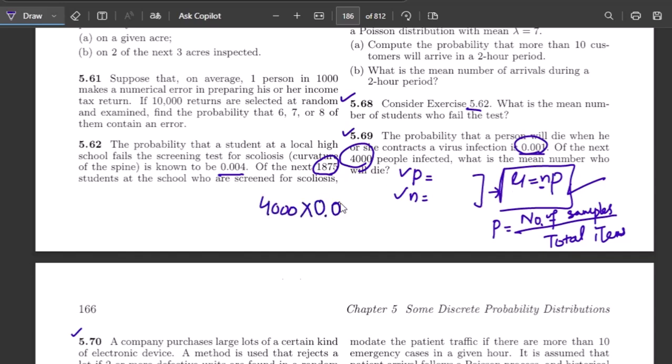So 4000 multiplied by 0.001. It would be 4. So this is the mean number of people who will die is 4. Similarly here in 5.62, what was the answer? It was 0.004 multiplied by 1875, and multiplying them we can find the answer of question 5.68.